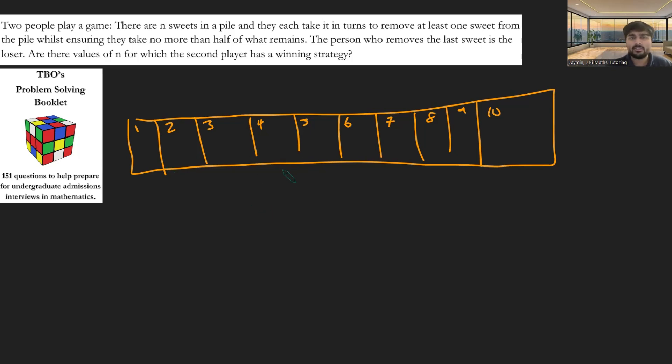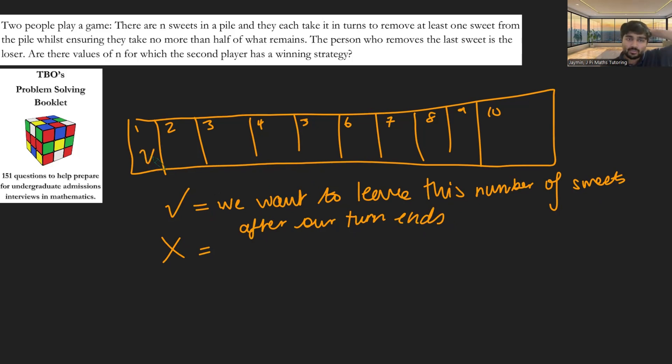What I'm going to do is I'm going to tick or cross each of these squares. Tick here is going to mean we want to leave this number of sweets after our turn ends. And a cross is going to mean we don't want to leave this number of sweets after our turn ends. So each square is either going to be a tick or a cross, and this is a perfectly determinable game.